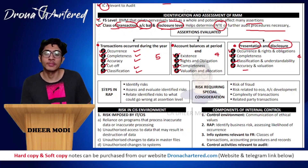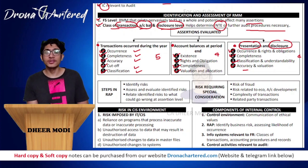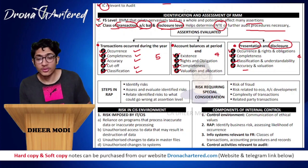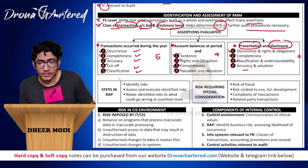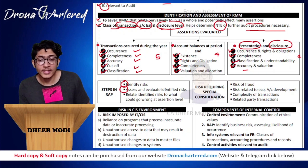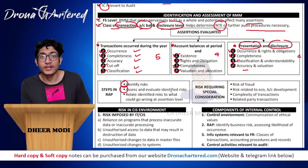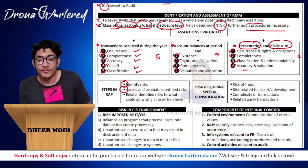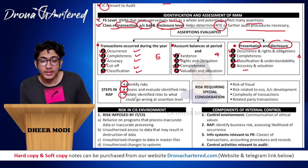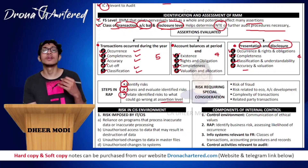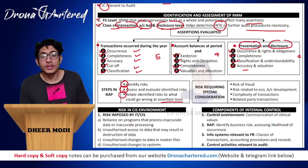Now the steps in the risk assessment procedure. There are three steps. First is you identify the risk. Second is you assess and evaluate the identified risk. Third is you relate the identified risk to what could go wrong at the assertion level. Once you have understood the risk, you have to determine what can go wrong at the assertion level.